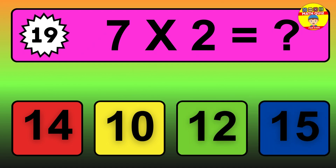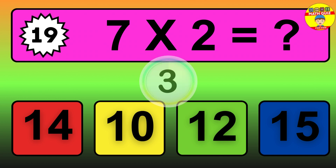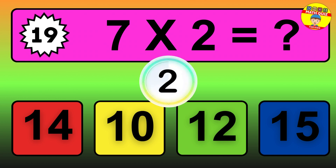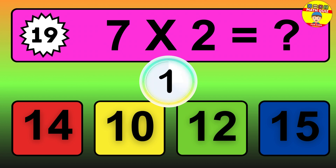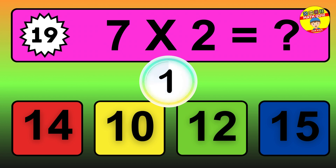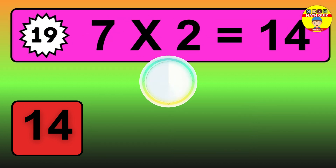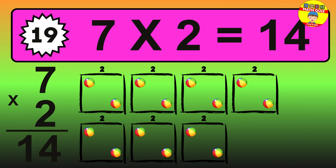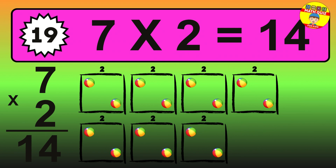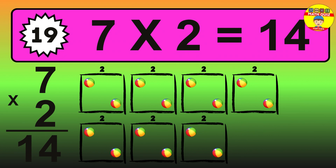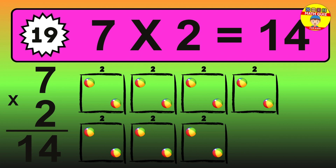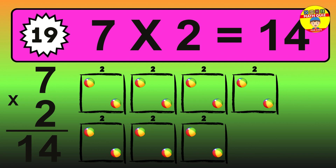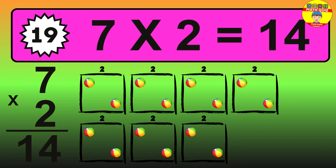Question 19. 7 times 2 equals what? The answer is 7 times 2 is 14. To calculate, we have 7 groups with 2 balls each one. So, how many balls do we have? 14 balls.